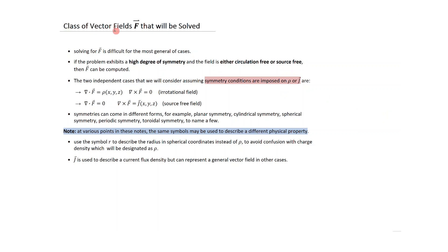The class of vector fields F to be solved: solving for F is difficult in the most general cases, so we focus on problems with a high degree of symmetry where the field is either circulation-free or source-free. The two independent cases are: divergence of F equals rho with curl of F equals zero (an irrotational field), and divergence of F equals zero with curl of F equals J (a source-free field).